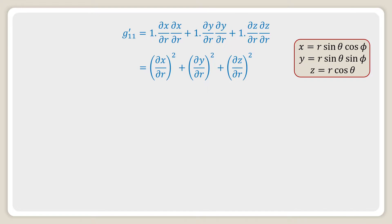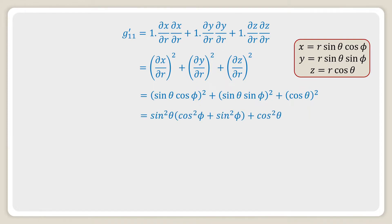Since x = r sinθ cosφ, y = r sinθ sinφ, z = r cosθ, we get (sinθ cosφ)² + (sinθ sinφ)² + (cosθ)². Taking sin²θ common from the first two terms gives sin²θ(cos²φ + sin²φ) + cos²θ = sin²θ + cos²θ = 1. So g'₁₁ = 1.